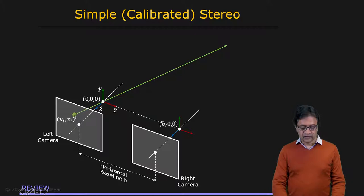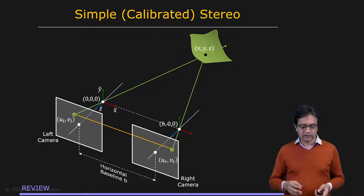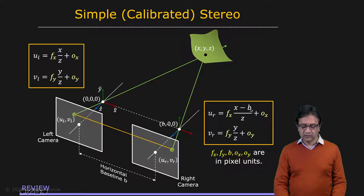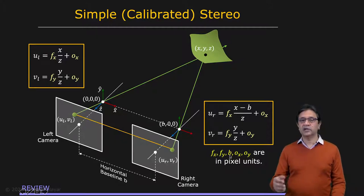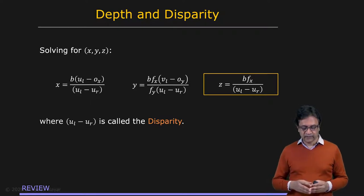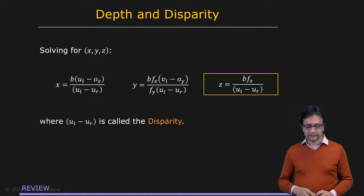Let's say there's a point UV in the left image. We find the corresponding point in the right image, shoot out two outgoing rays, and wherever these rays intersect, that's where the physical scene point lies. This is done using the perspective projection equations. You have the perspective projection equations for the left camera, where FX, FY, OX, and OY are the internal parameters, which we assume are known. For the right camera, we have exactly the same equations except that you have X minus B, where B is the baseline. Since we know FX, FY, OX, OY, and the baseline B, we use these four equations to solve for X, Y, and Z — the coordinates of the point in the scene. Of interest is this denominator, UL minus UR, which we call the disparity of the scene point in the two images.